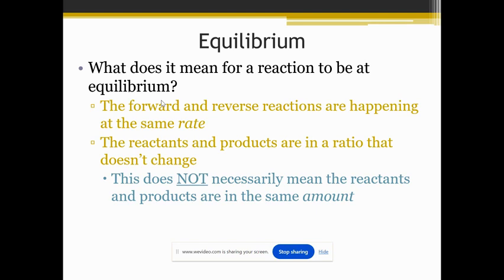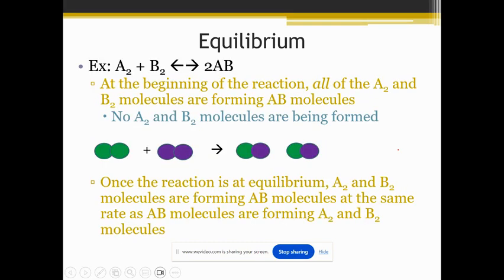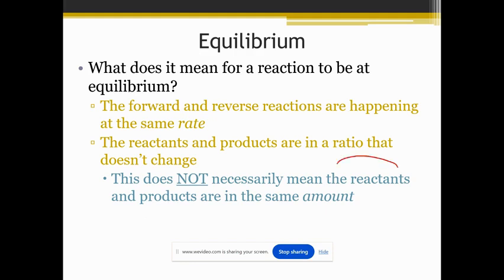So like I was saying with equilibrium, what that means is that your rate of your forward reaction is happening at the same time that your reverse reaction is happening. The reactants and products are in a ratio that does not change. This doesn't necessarily mean that they're in the same amount. So you may have more reactants. And if it's a weak one, you will have more reactants than you will have products. So more of it will be in the reactant and less of it will be in the product area. But it's still going to be exchanging these things back and forth and back and forth.